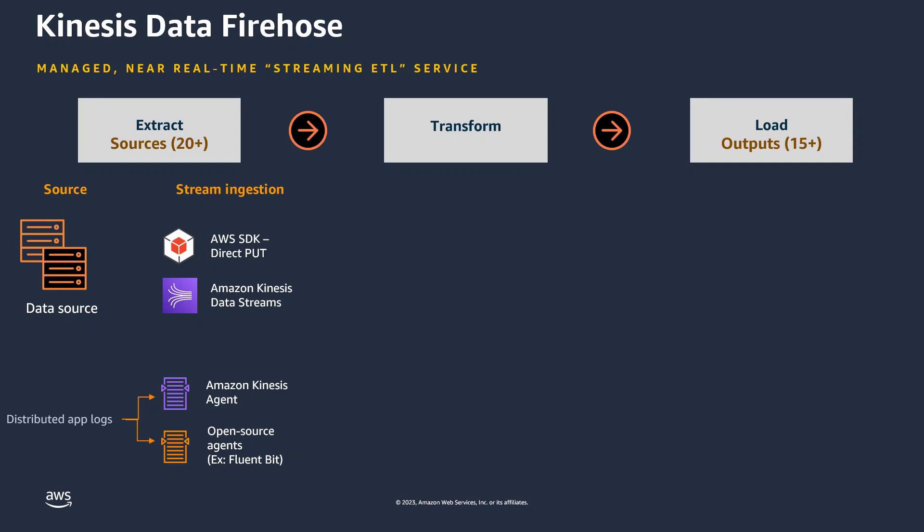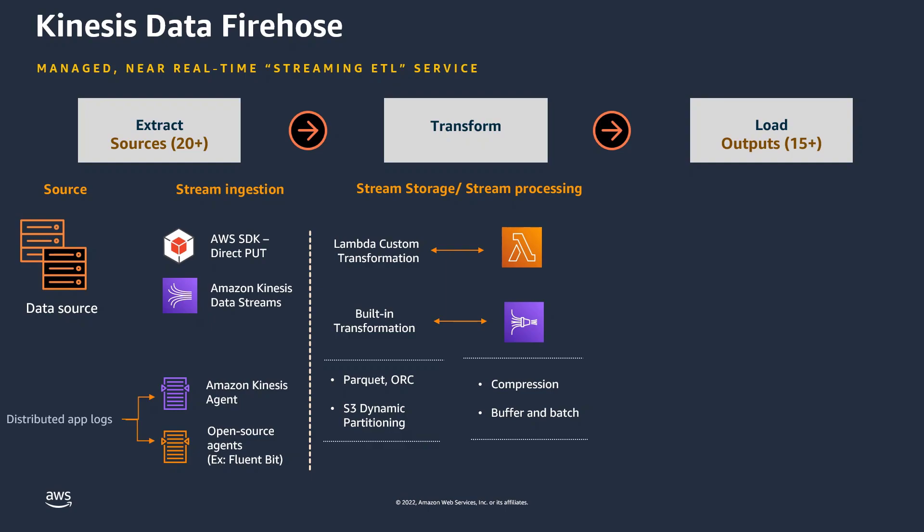Stream ingestion options include AWS SDK and Amazon Kinesis Data Streams. For logs generated by distributed applications, you can also use Amazon Kinesis Agent or open-source agents such as FluentBit. Stream storage and processing are handled by Kinesis Data Firehose, which can perform two types of transformations. You can use a Lambda function to do custom transformations, or use built-in transformation capabilities such as data format conversion or dynamic partitioning.